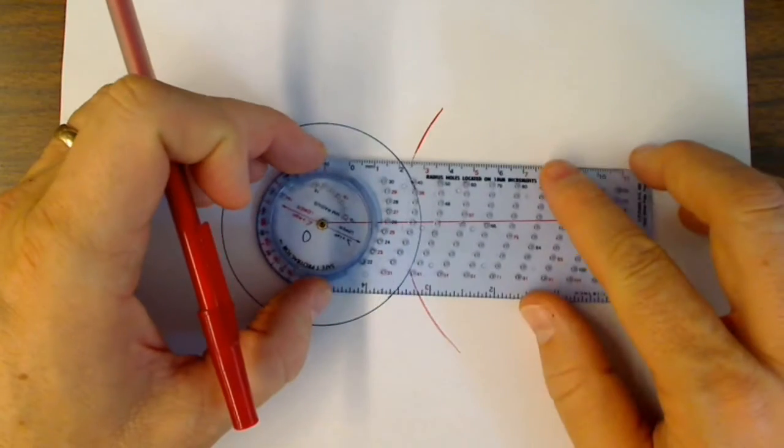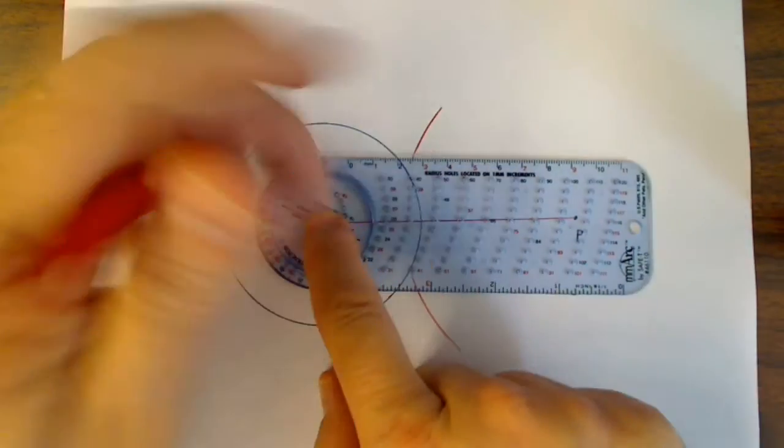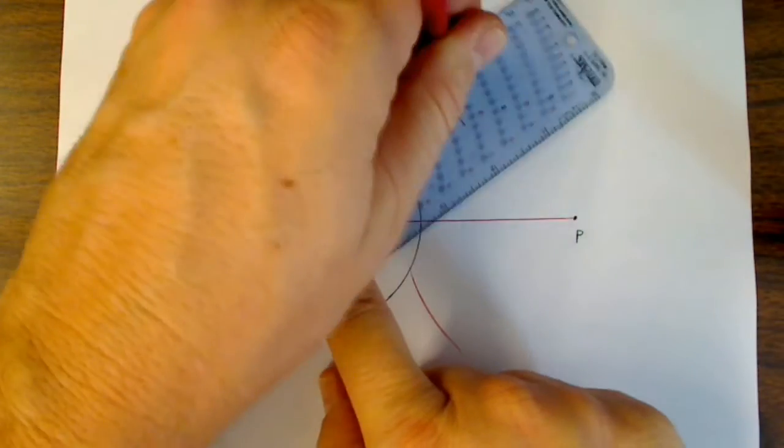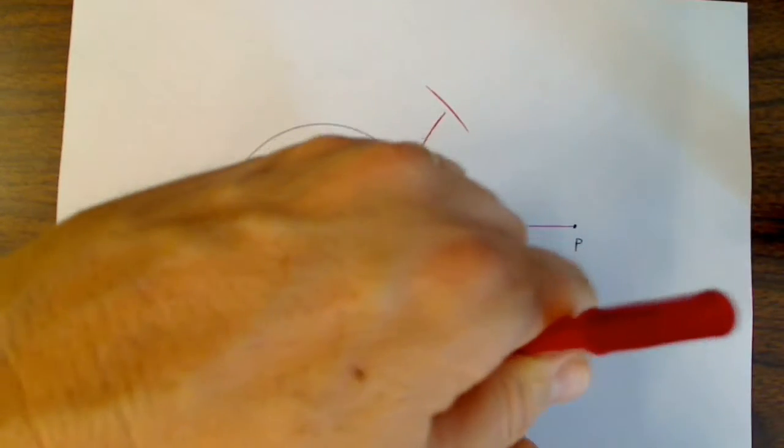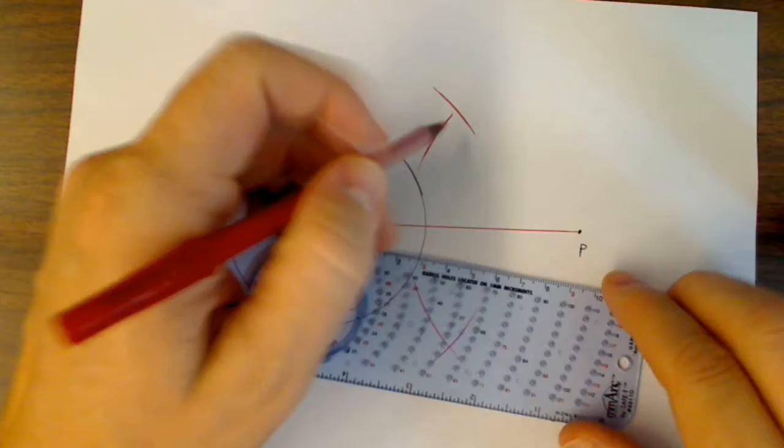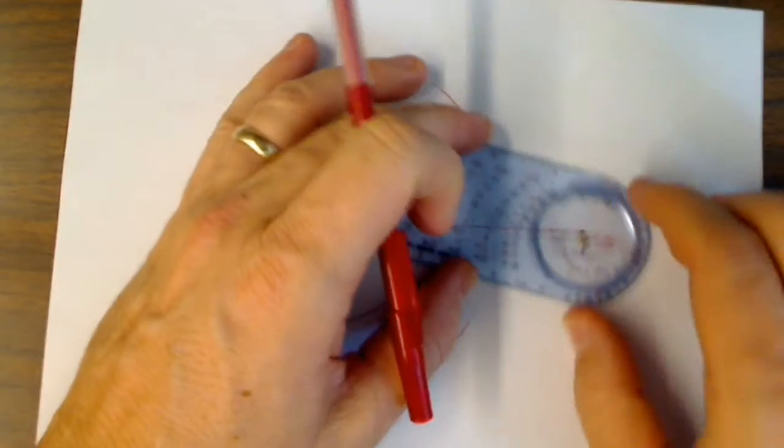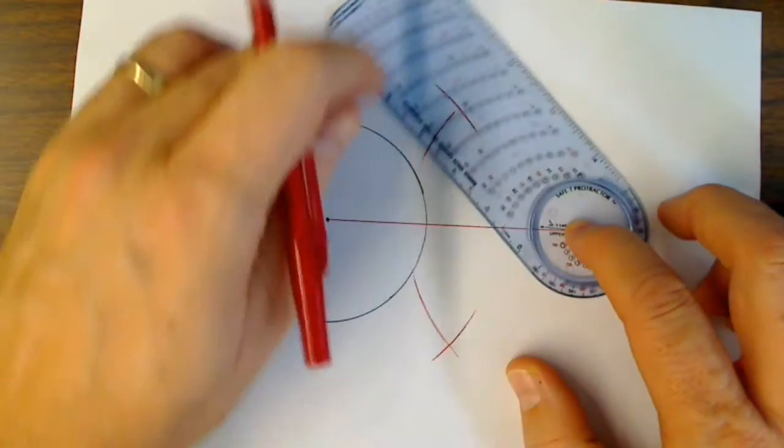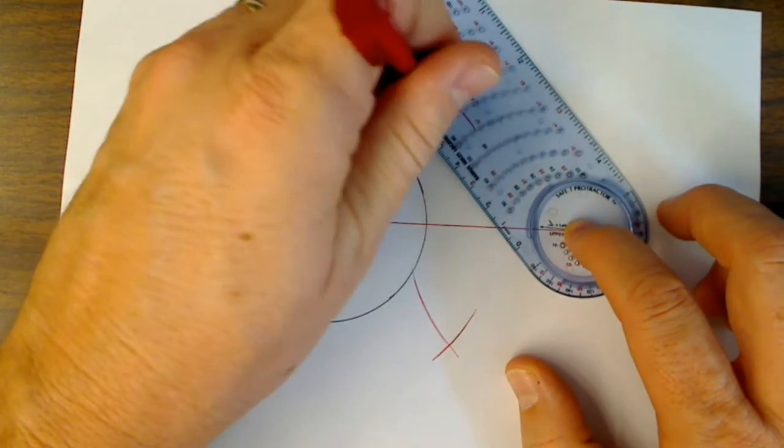And I'm going to switch to the other point, point O, and use my 70 and mark one above and below. And it looks like I missed up here. So I'll go back to point P and make a mark up above on 70.